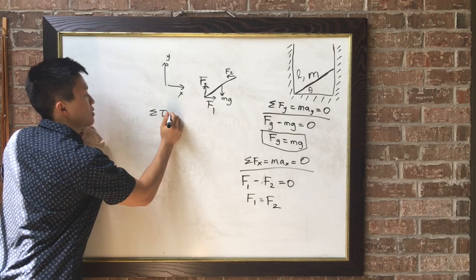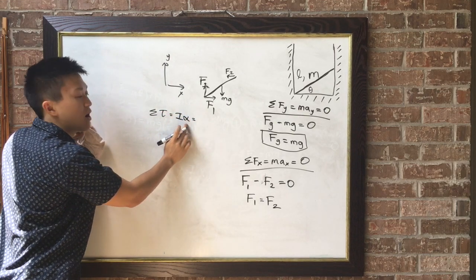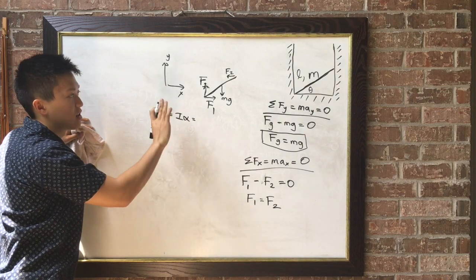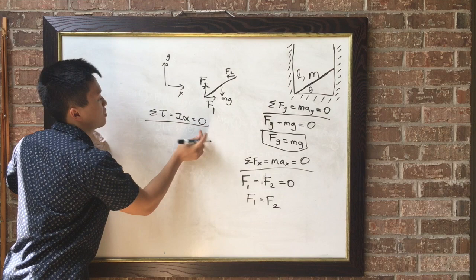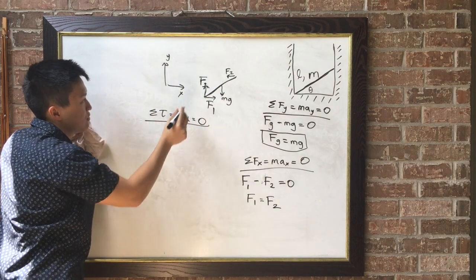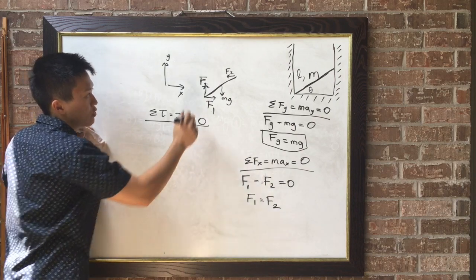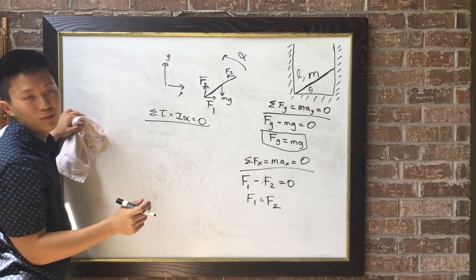The net torque will equal I times alpha. And there's no alpha since there's no angular acceleration since it's not moving. The stick isn't moving, so zero. So first, if we denote, let's say, counterclockwise motion to be positive,